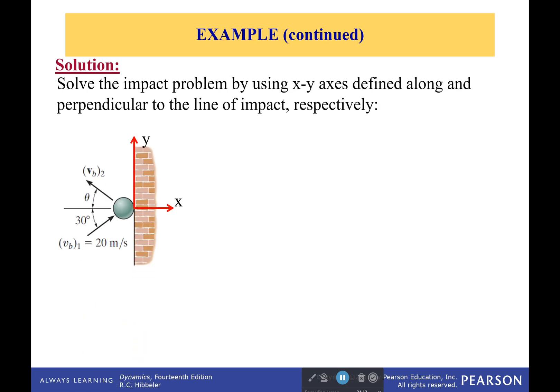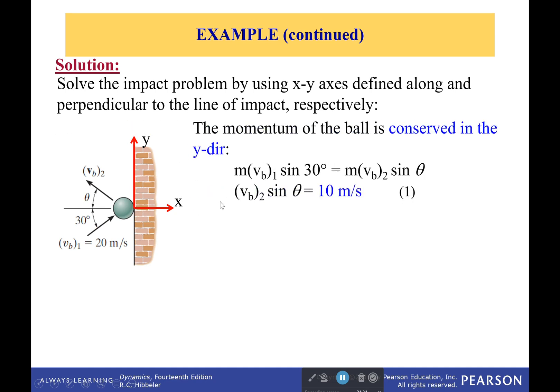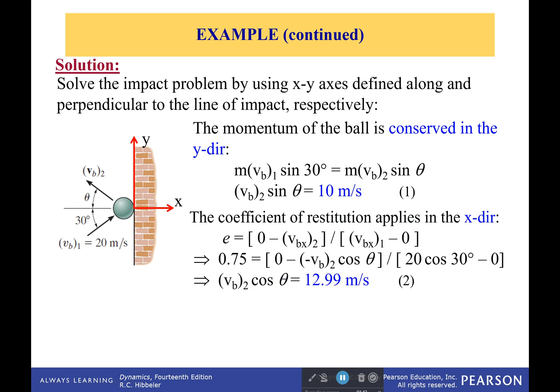First off, we're going to use these x-y axes found right here — this is usually the best setup, with the x-axis going along the impact line and the y-axis in the plane of impact. We know the momentum of the ball is conserved in the y direction, so its velocity in the y direction was 10 meters per second beforehand and will be 10 meters per second afterwards. We also know the coefficient of restitution, so we can solve for the final velocity from the initial velocity, but only for the x direction.